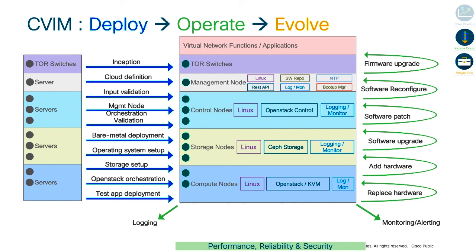Cisco VIM automates most of these tasks, exposing only meaningful activities to operators and admins. This minimizes the time operators spend managing the telco cloud itself so they can focus on workloads — mobility workloads, VNFs, and applications — because that's where the business value is. By enabling operators to maximize their resources where it matters, Cisco VIM sets them up for success.